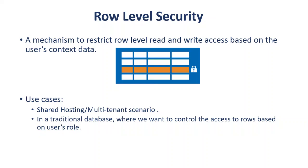Another example, which you must have seen in traditional databases, is where we want to control access to rows based on the user's role. For example, in the sales department, the sales manager will have access to all the rows in the table, while his direct reportees can see only the records applicable to them.